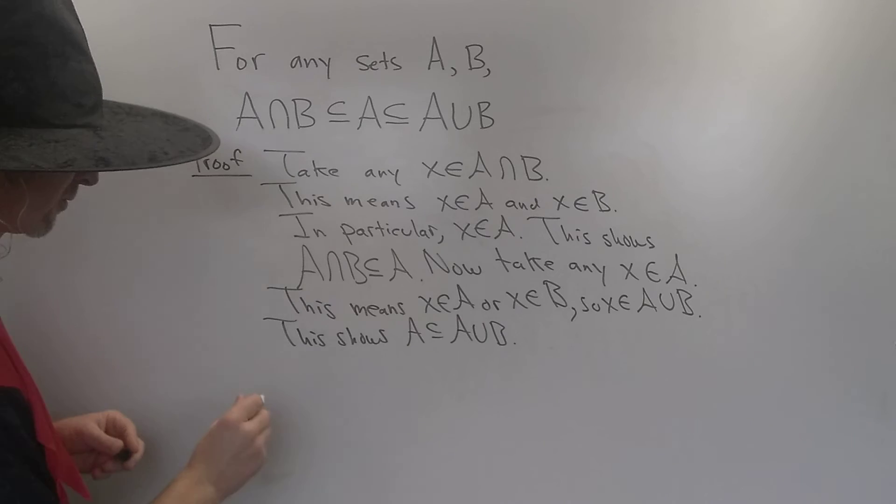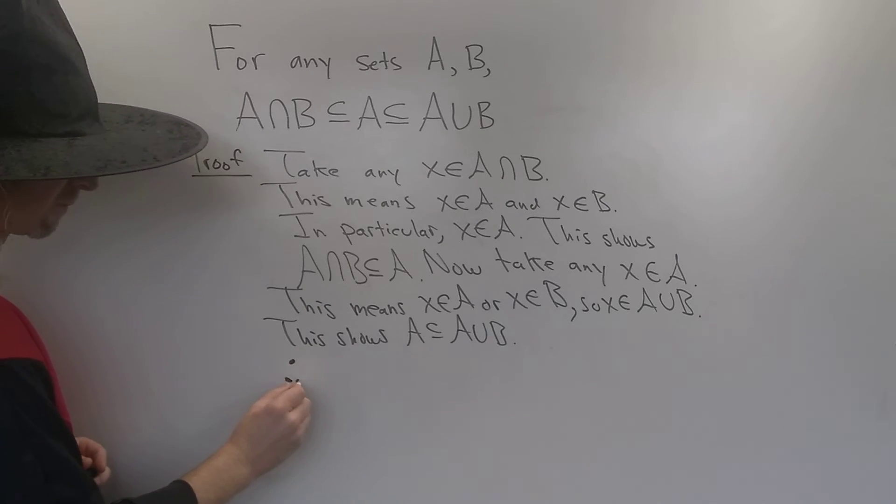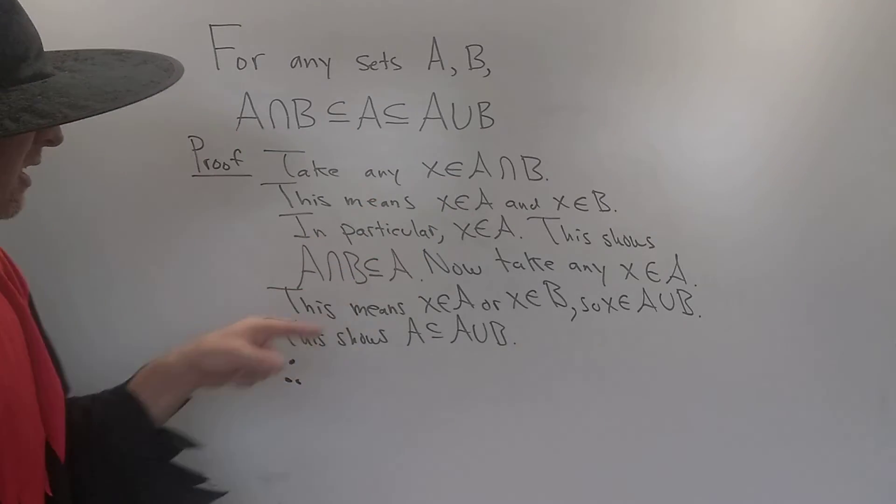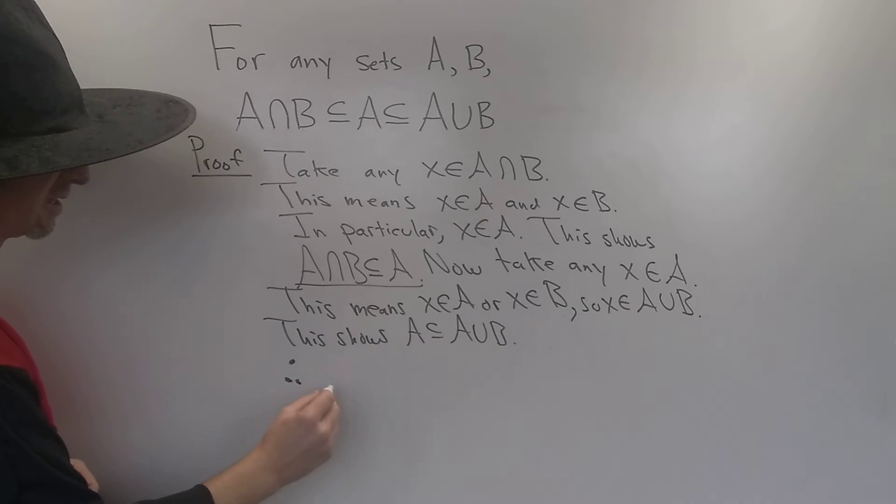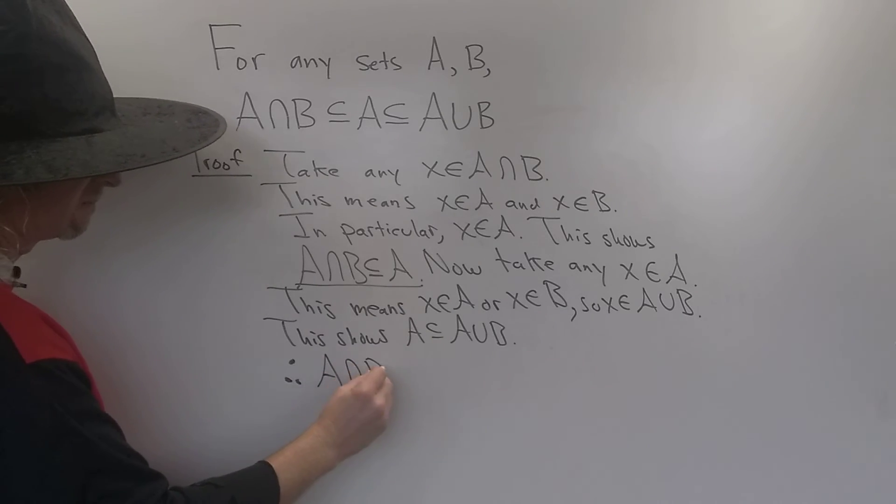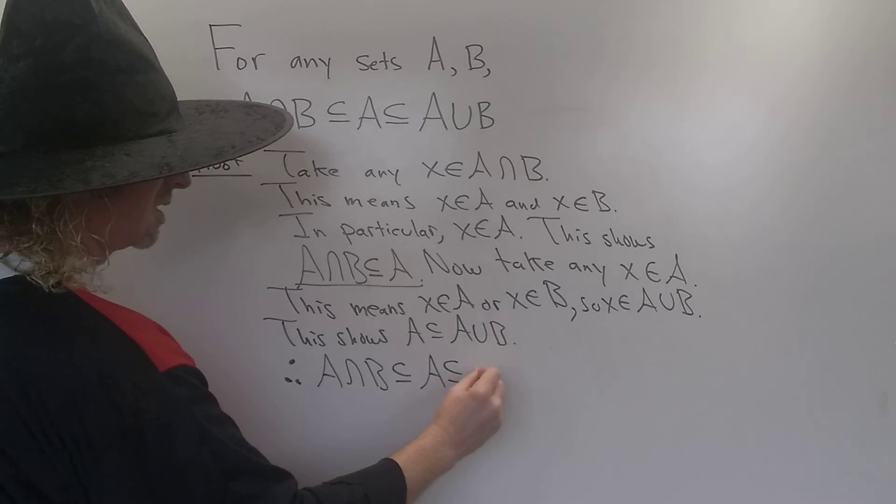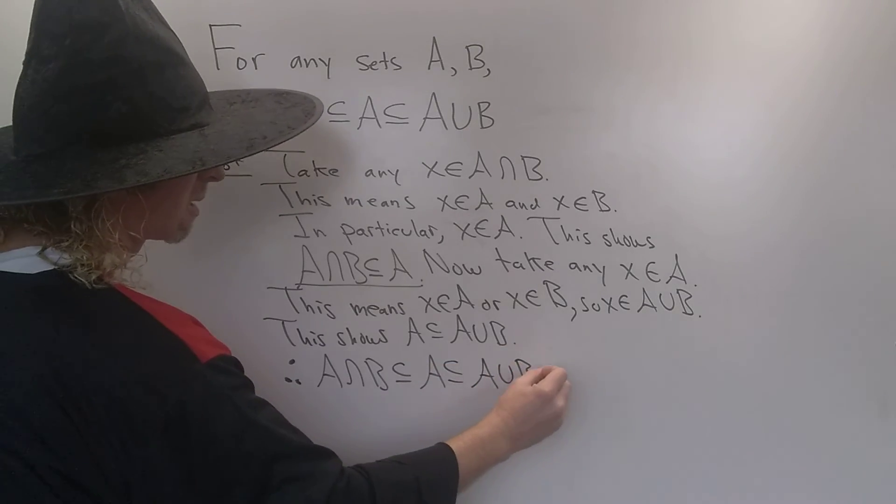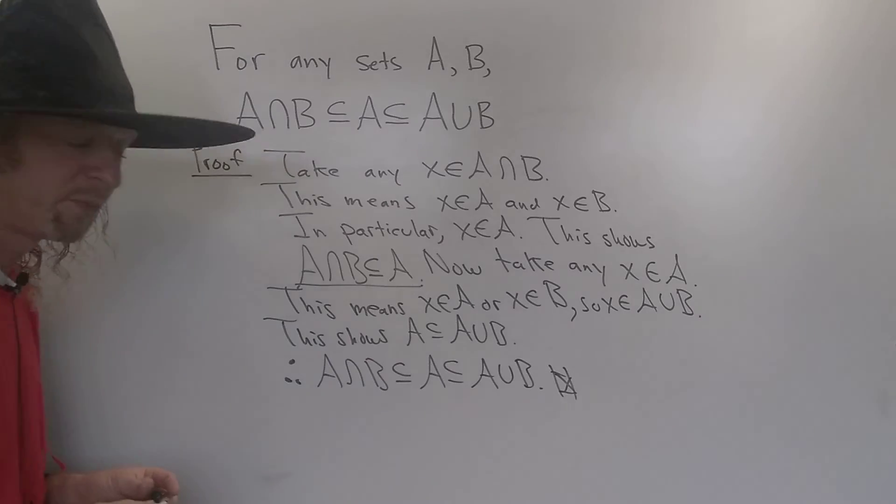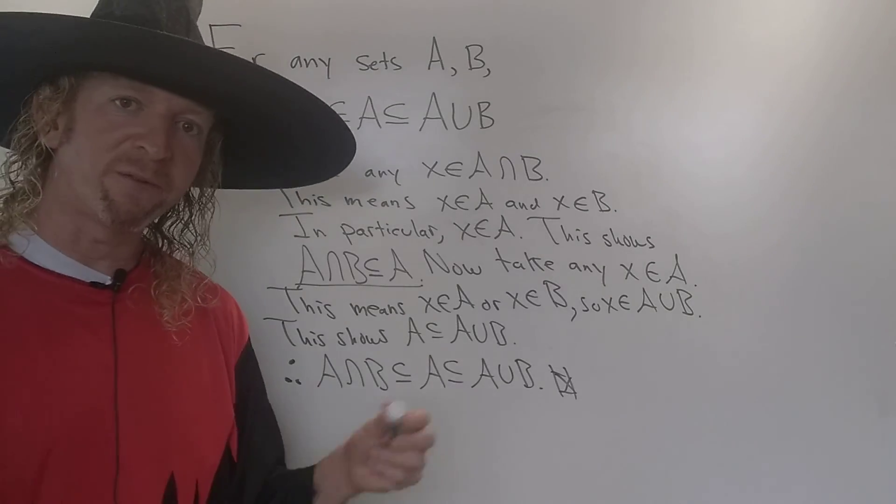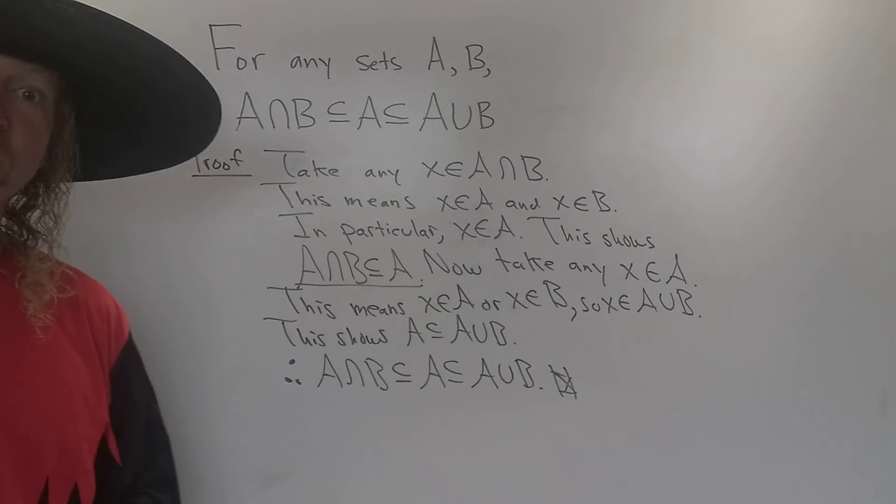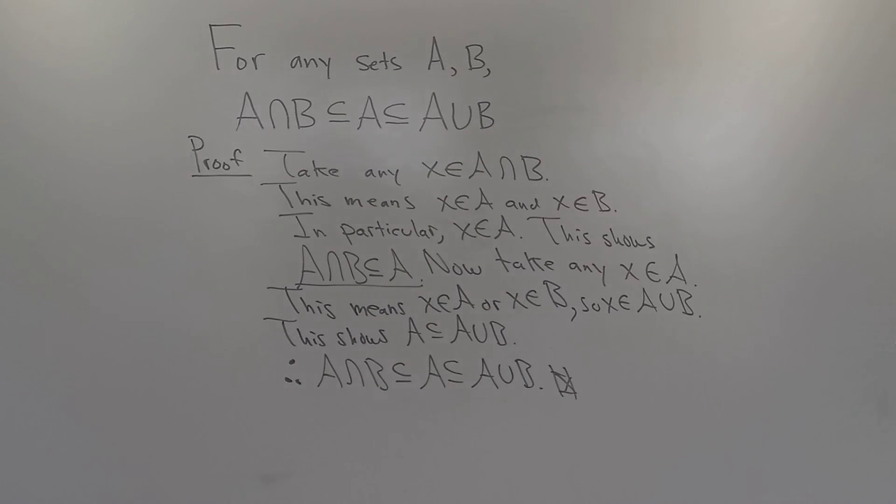So we've shown, therefore, A intersection B is contained in A, and A is contained in the union. And that completes the proof. That's it. I hope this video has been helpful to someone out there in the world. Until next time. Thank you very much.